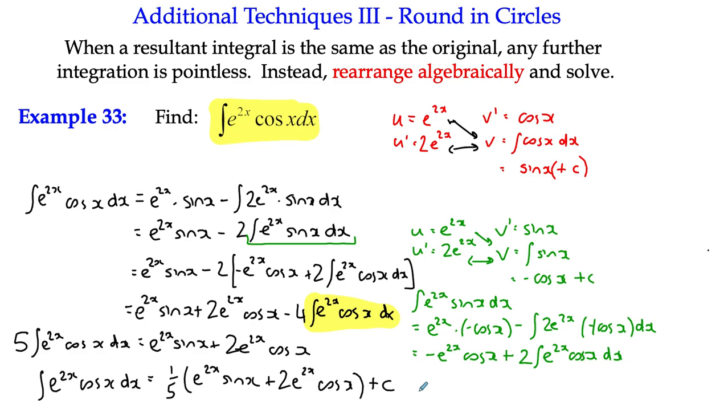So that's us done our rounding circles, as I call it, because you can do integration by parts, and we end up back where we started. And at that point, we then have to do a little bit of algebraic rearranging so that we get one lot of the integral on the left-hand side. It's really a nice solution. I hope that makes sense. And if you go and find some other examples just now and practice it yourself.